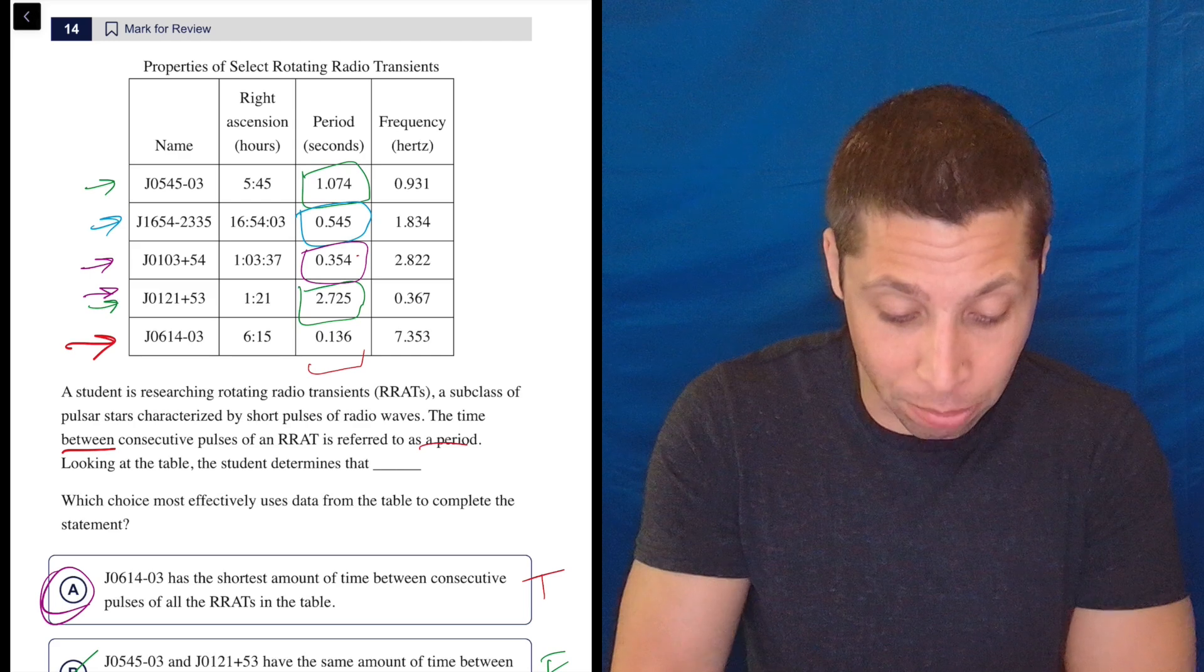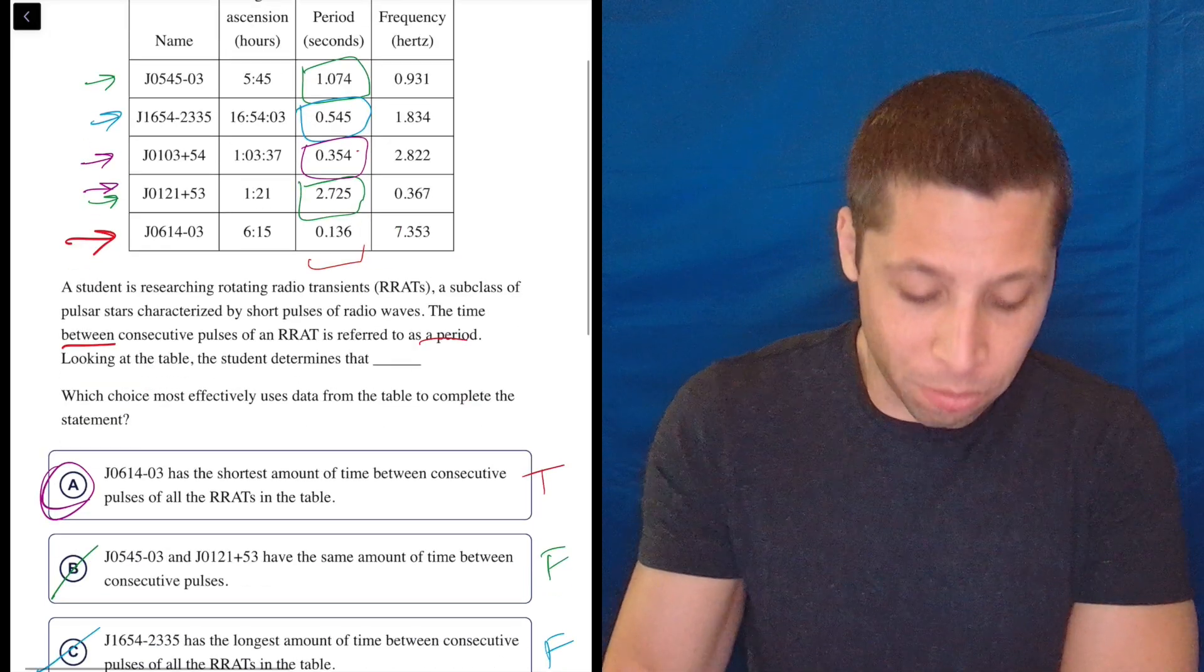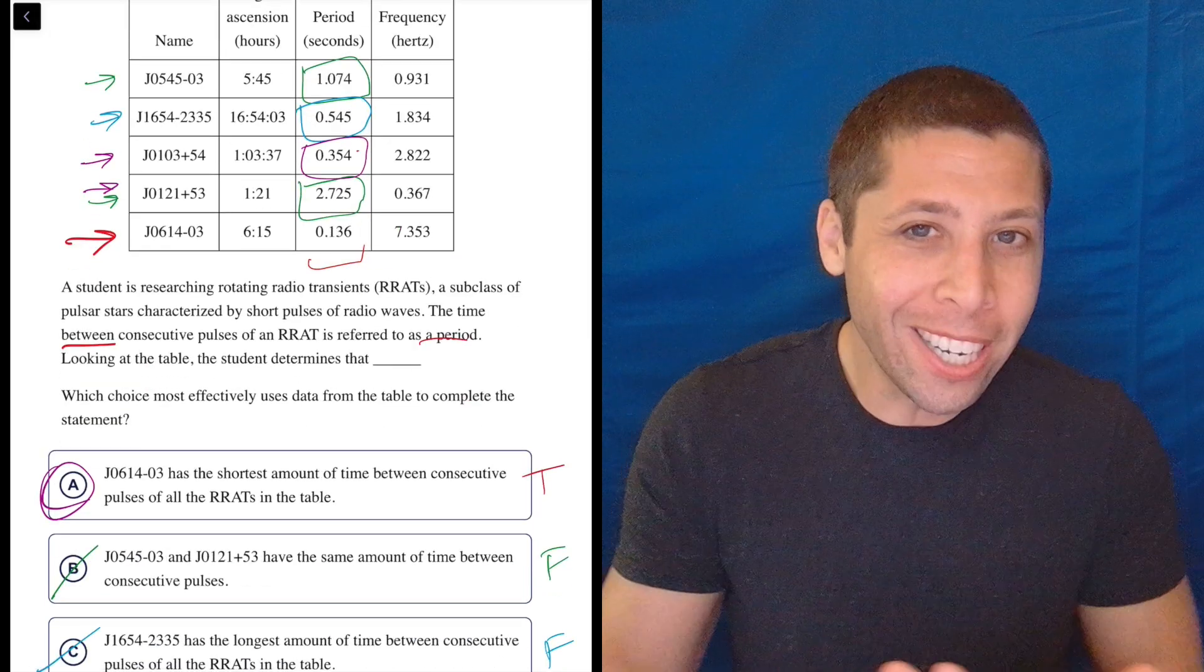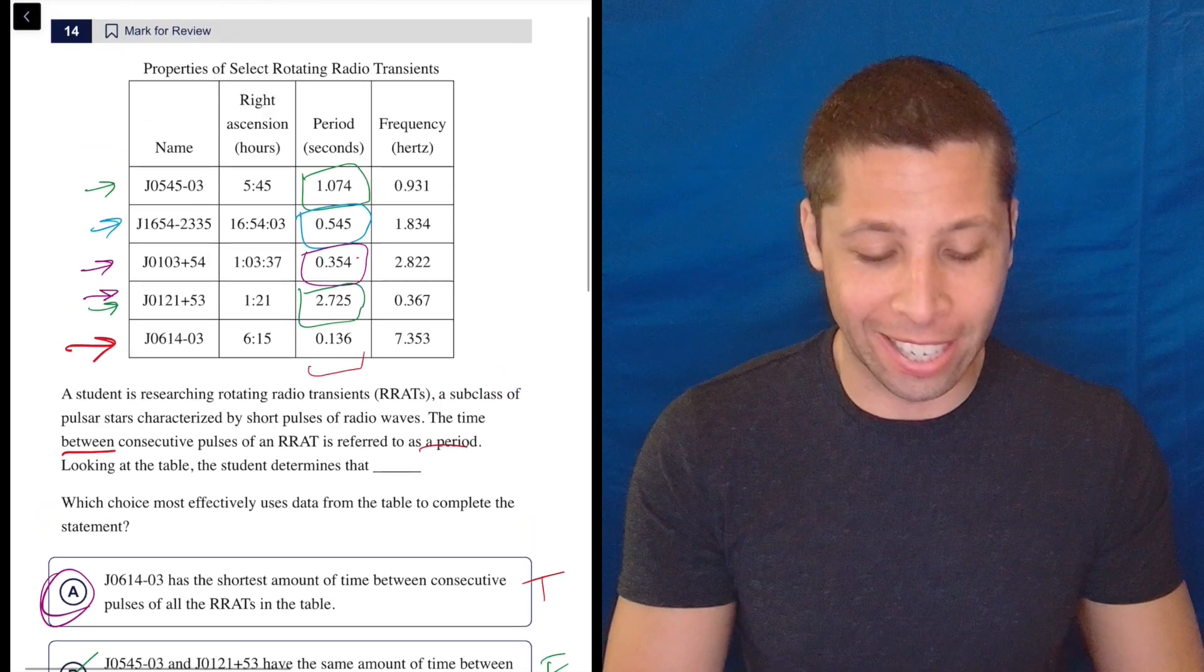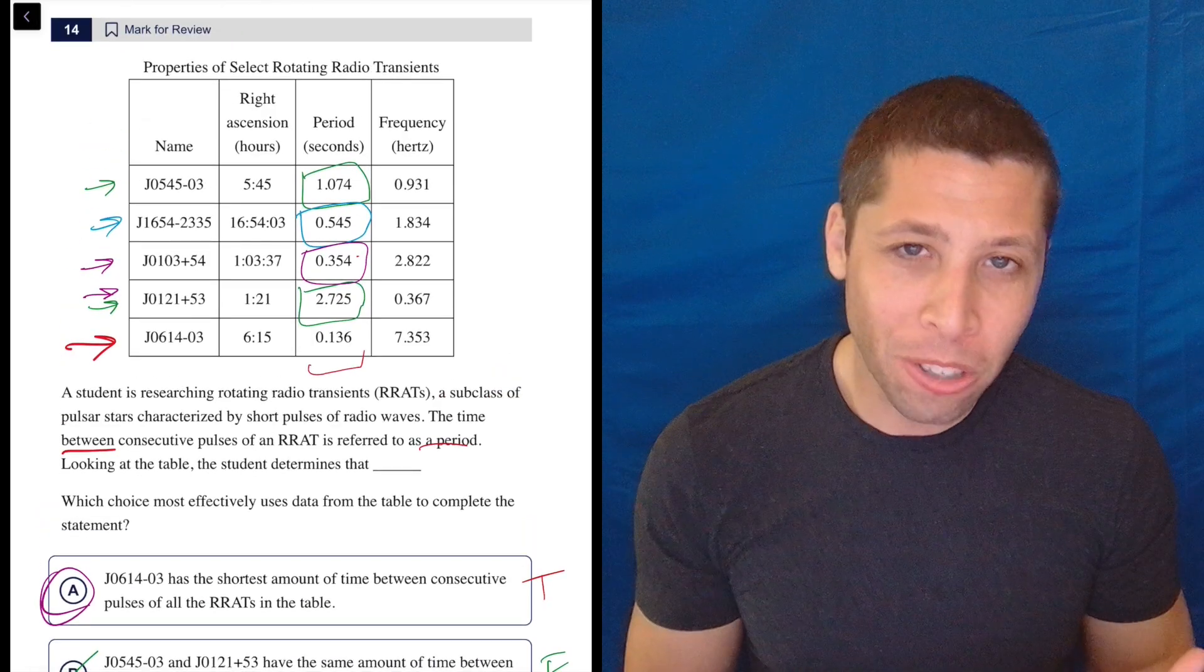So, you could see, even when I said it out loud, right, I was saying, you know, 0614, 0545. Like, I was reading the numbers, because I just, it's too much. My brain can't handle it. I don't know what it is. But we all have our strengths and weaknesses.